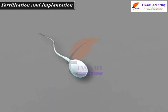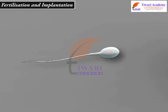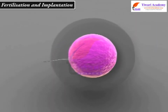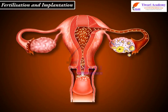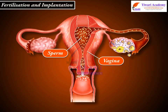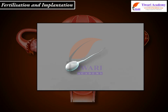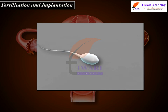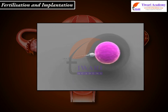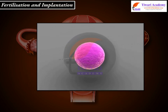Fertilization is defined as the fusion of the sperm nucleus with the ovum nucleus. For fertilization to occur, sperm must be deposited in the vagina no earlier than three days before ovulation or within one day after ovulation. This short window of opportunity is because the sperm and the ovum have only limited lives and they both soon die if they do not meet and fuse in this period.